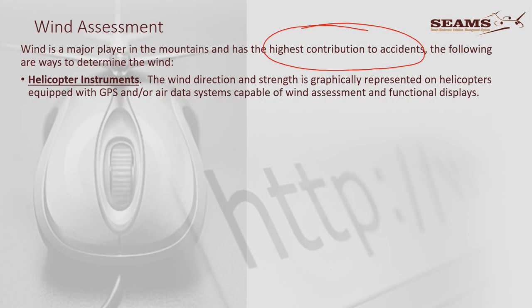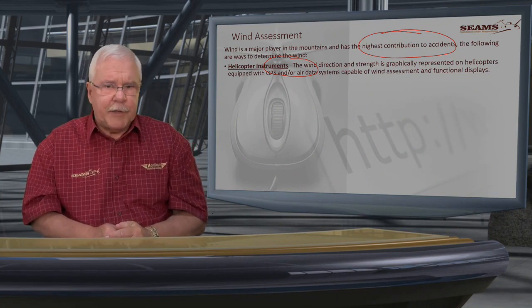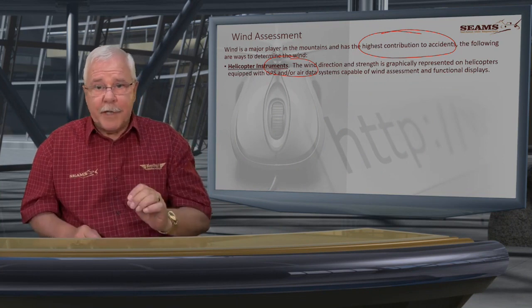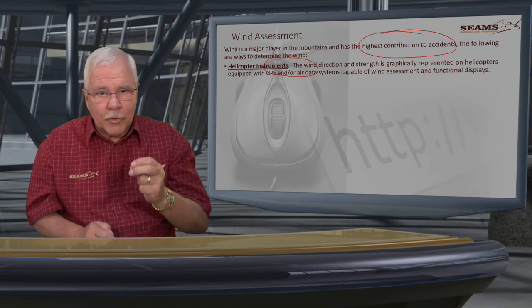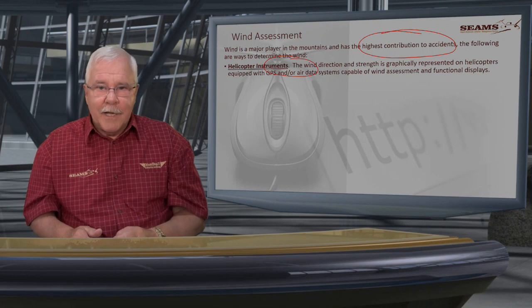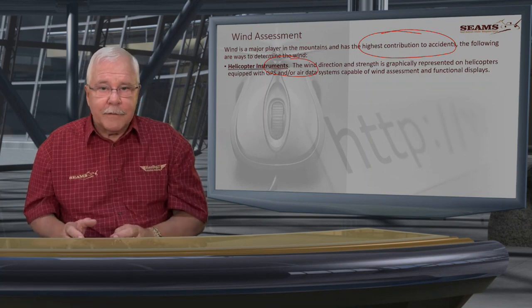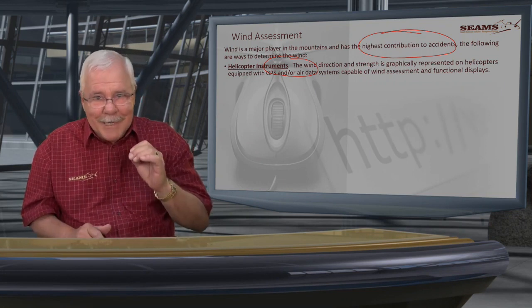Helicopter instruments — wind direction and strength — are presented via the GPS and air data system. If indicated airspeed is 80 knots and ground speed is 90 knots, you have a tailwind. Good deductive reasoning, but that only tells you a tailwind component of 10 knots. When you turn 180 degrees you'll have a headwind component of 10 knots — but remember that does not mean that is the full strength of the wind. Any headwind component is better than any tailwind component.